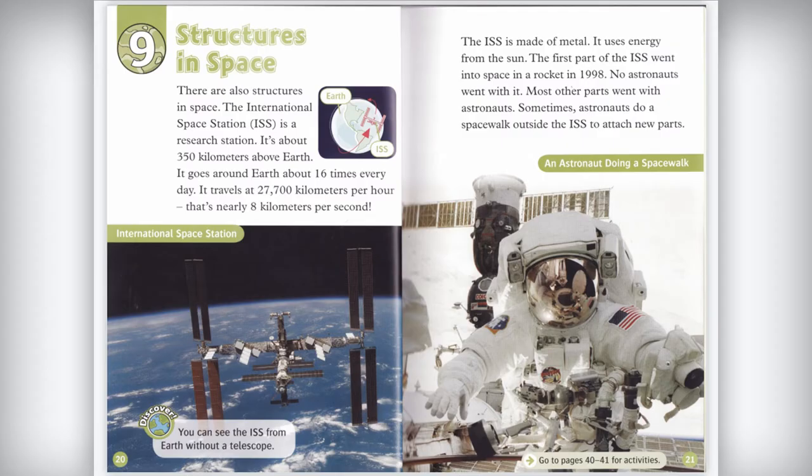There are also structures in space. The International Space Station (ISS) is a research station about 350 kilometers above Earth. It goes around Earth about 16 times every day. It travels at 27,700 kilometers per hour — that's nearly 8 kilometers per second. The ISS is made of metal and uses energy from the sun.